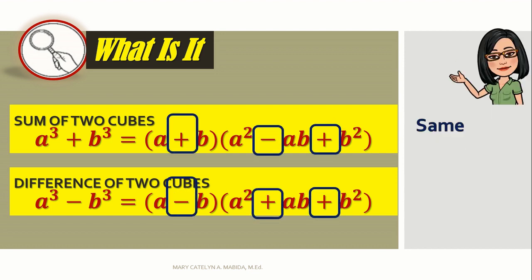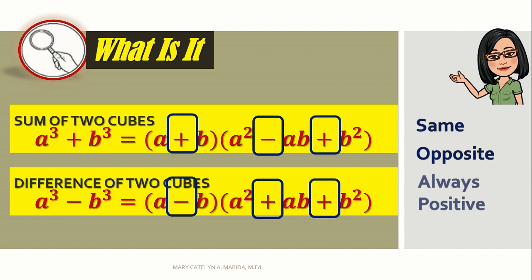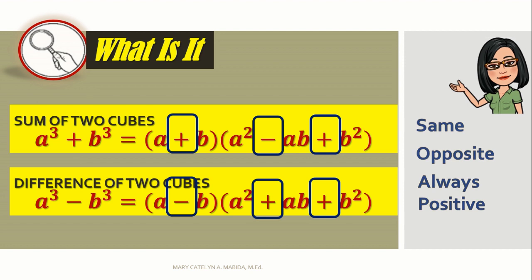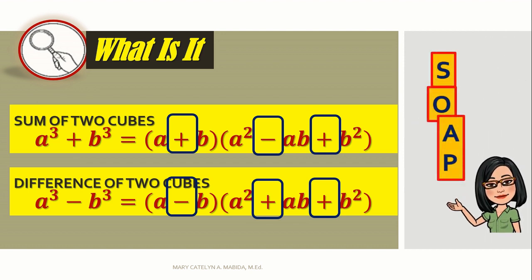There you go. Same, it means same with the sum or difference of two cubes. Opposite, it means opposite with the sum and difference of two cubes. And always positive. Remember that? It's SOAP.